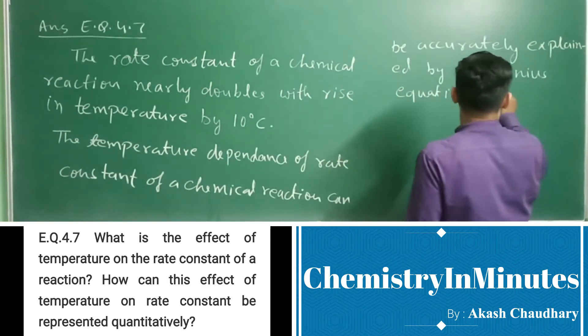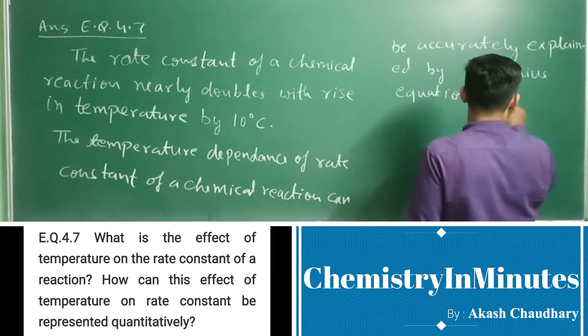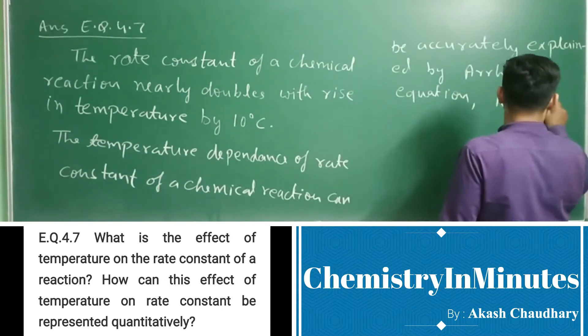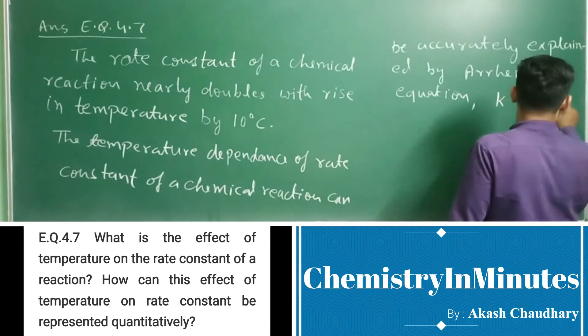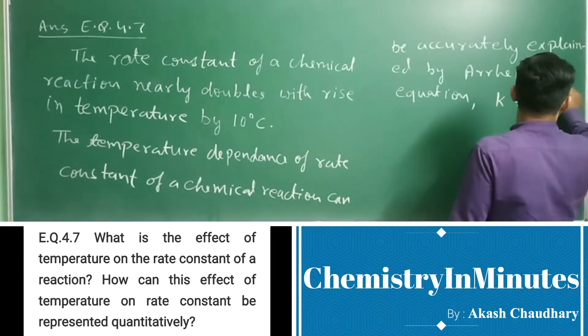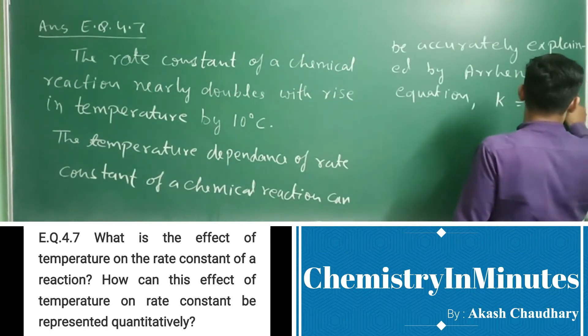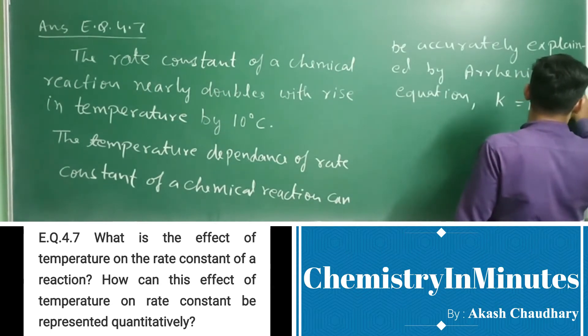k equals A times e raised to the power minus Ea upon RT.